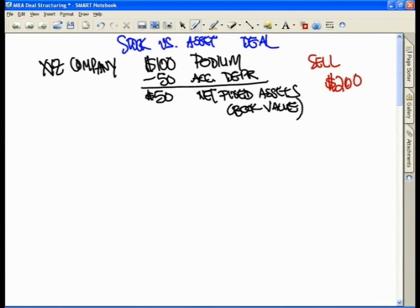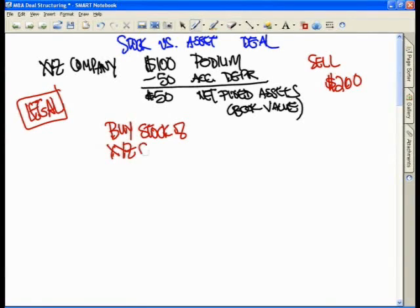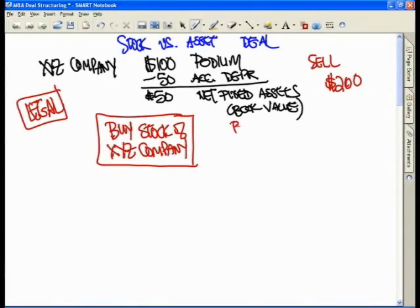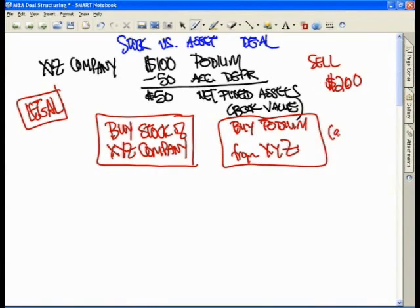Now, let's talk about, from the legal perspective, the stock versus an asset deal. You have an option. You can buy the stock of XYZ Company and own the entire company as well as the podium. Or you can buy the podium outright from the company themselves. We'll put in parentheses, this is an asset deal.